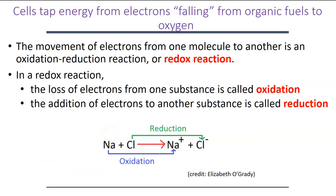Before we look at the different stages of cell respiration, let's review oxidation-reduction reactions. Cellular respiration, especially for our eukaryotic cells, involves breaking down organic molecules like glucose using oxidation-reduction reactions — shortened to redox reactions. Through those reactions, we're ultimately able to produce large quantities of ATP.